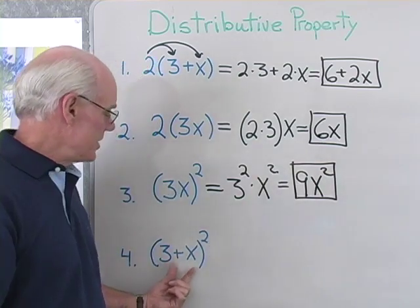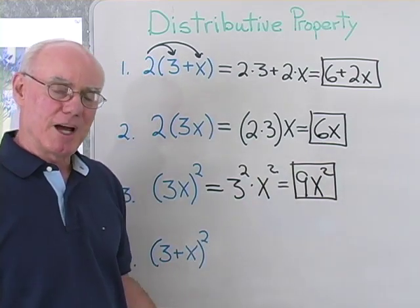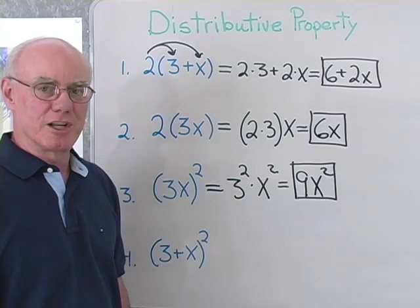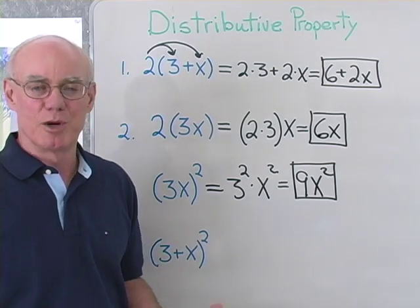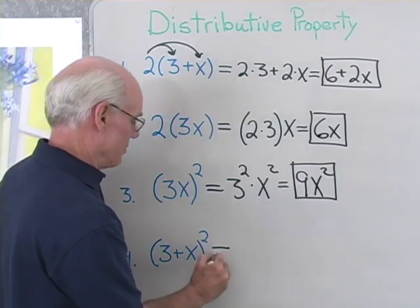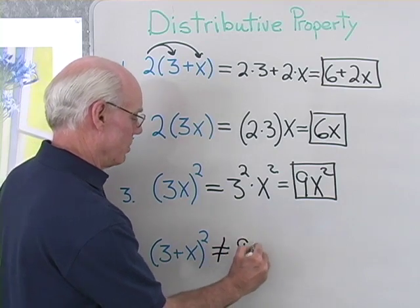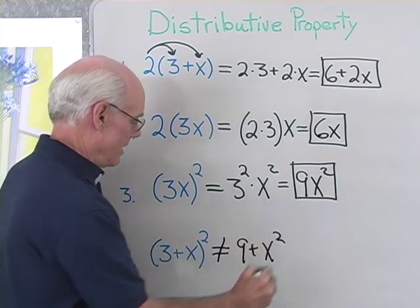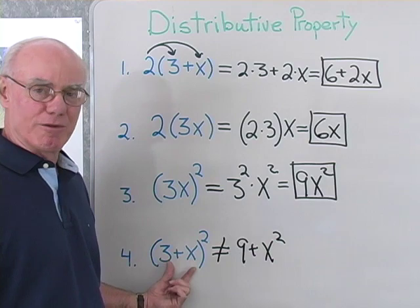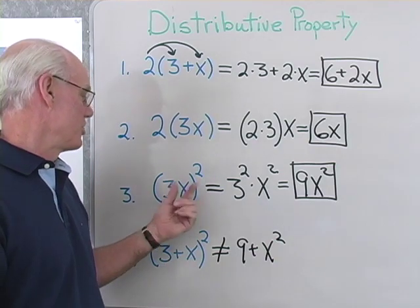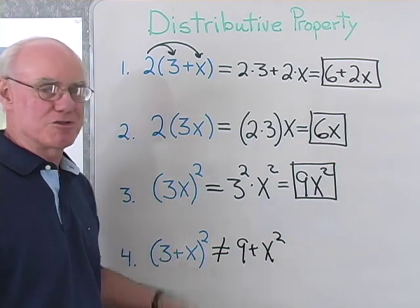Now 3 plus X to the second power. If you haven't done multiplication with binomials yet, I'll just tell you what it's not. This is not equal to 9 plus X squared. Exponents do not distribute over sums like this. Exponents will distribute over products but not over sums.